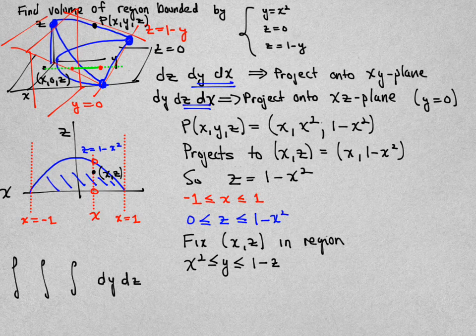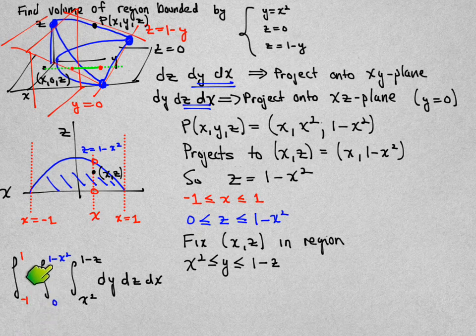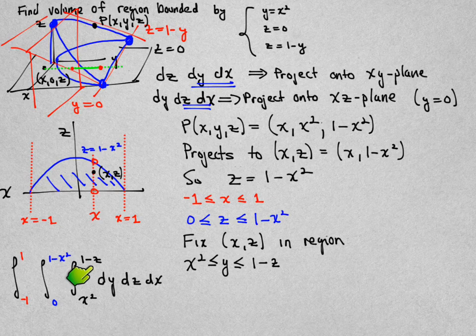It's just a matter of writing down the triple integral now. x goes from minus one to one, z goes from zero to one minus x-squared, and then y goes from x-squared to one minus z.